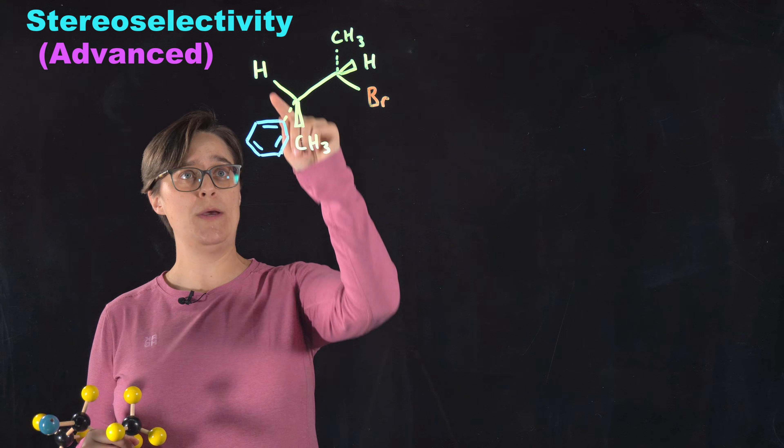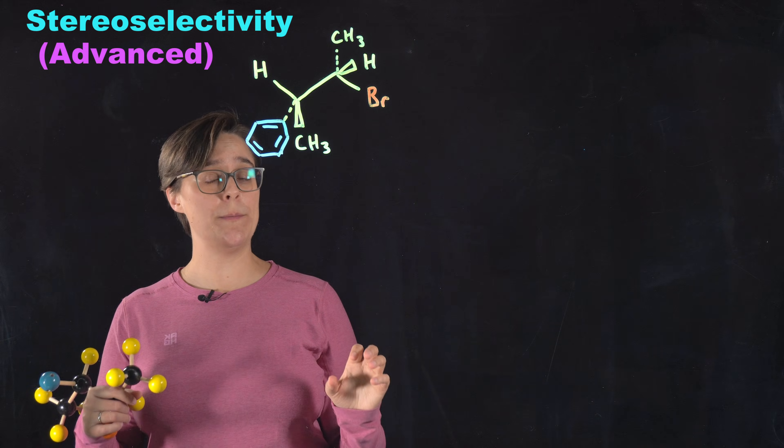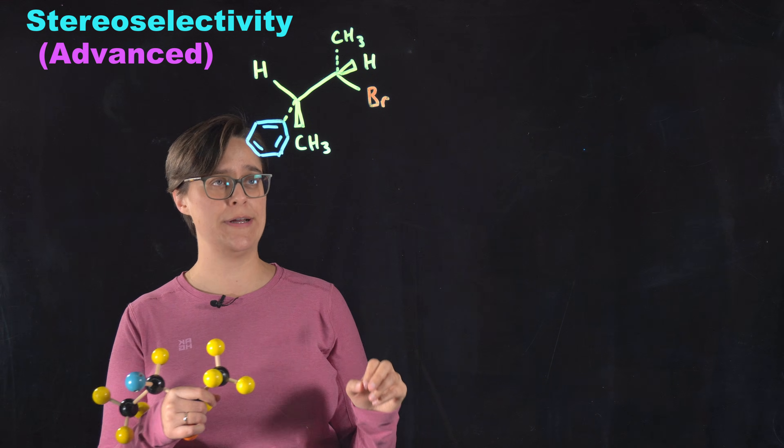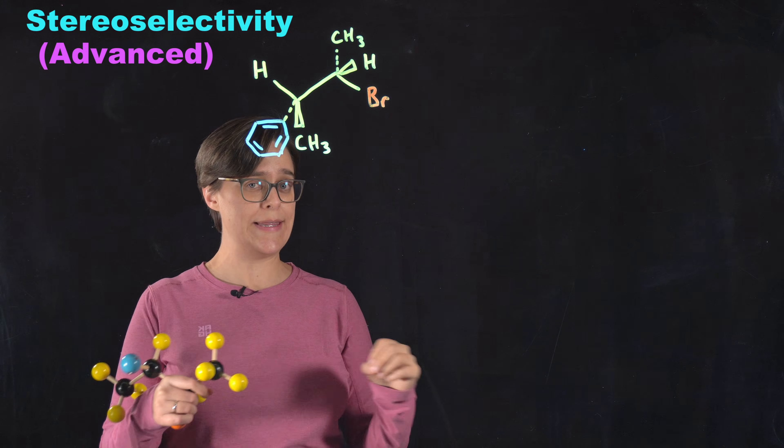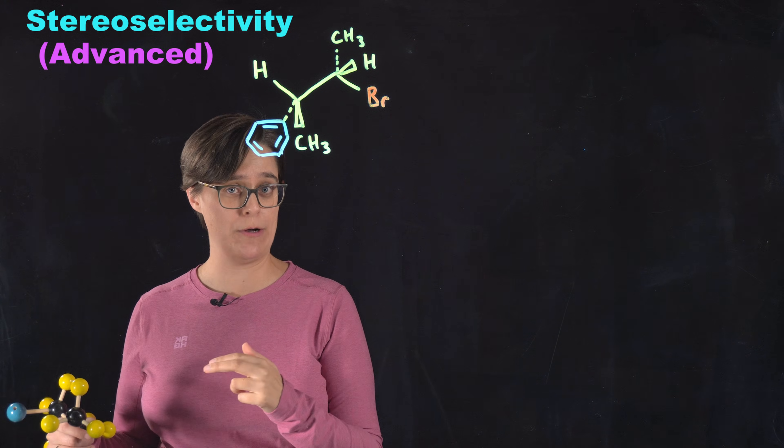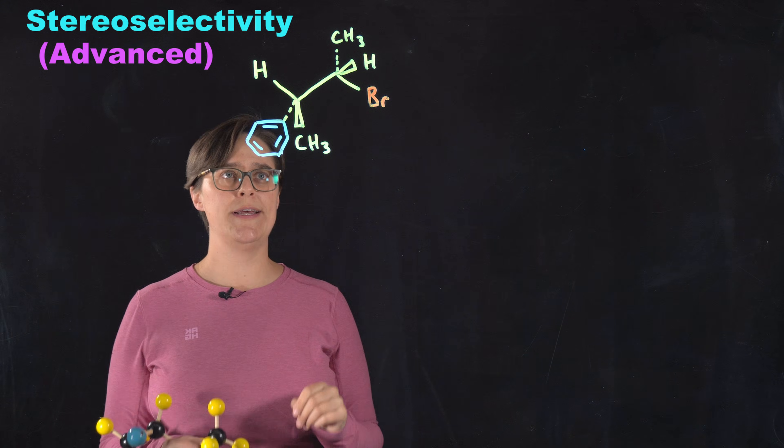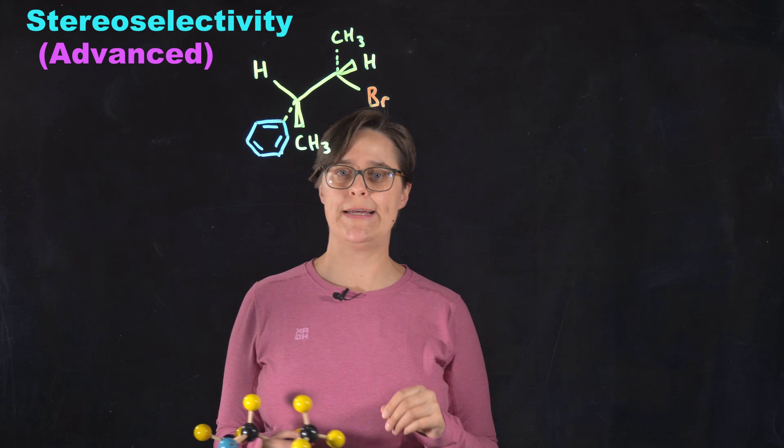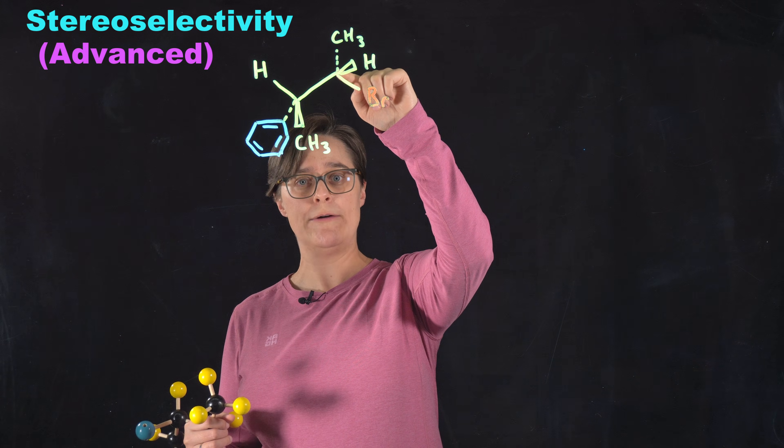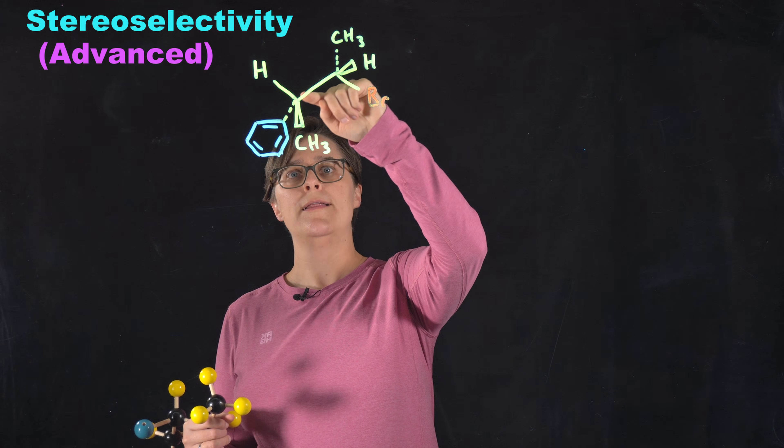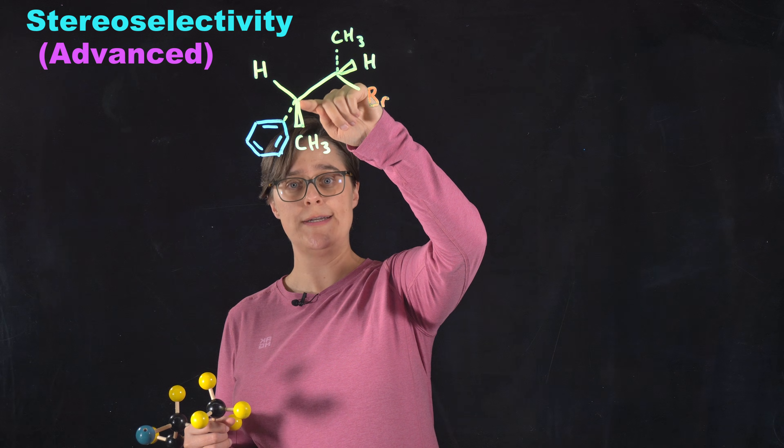If there is only one hydrogen on the beta-carbon, we are not going to get a mixture of cis and trans. We are going to have only one product. And that product does not follow that rule I just told you regarding steric hindrance. Let's take a moment to wrap our heads around this. This bromine is our leaving group. That makes this our alpha-carbon. This is a beta-carbon. This is also a beta-carbon. But according to Zaitsev's rule, this is the bond that's going to form our major product.